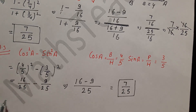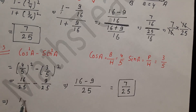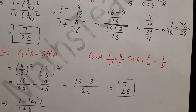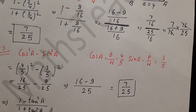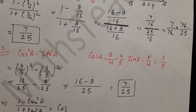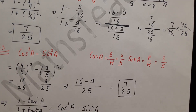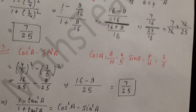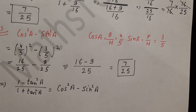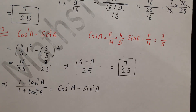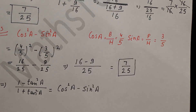Conclusion: 1 minus tan² A divided by 1 plus tan² A equals cos² A minus sin² A. Left hand side equals right hand side — both equal 7/25. I hope this question is solved clearly in my video. Please don't forget to like and subscribe. Thank you.